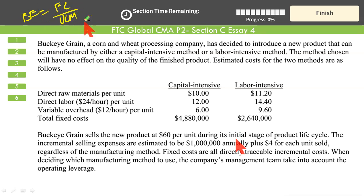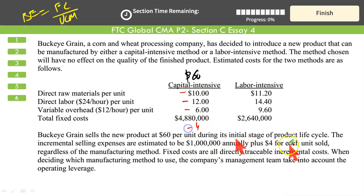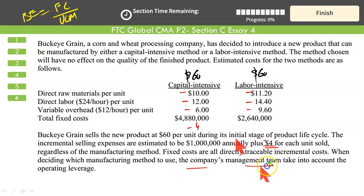Breakeven quantity equals fixed cost divided by unit contribution margin. Our selling price is $60. From this we deduct material, labor, variable overheads, and $4 selling expense. The unit contribution margin for capital intensive is: 60 less 10 less 12 less 6 less 4, giving $28. That is the unit contribution margin for the capital intensive production system.